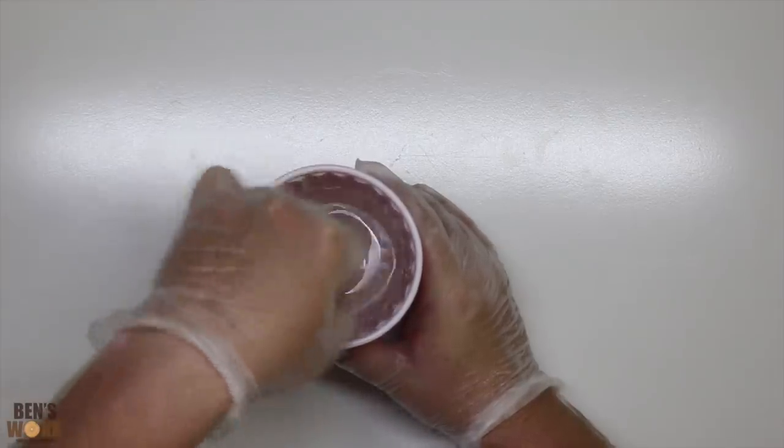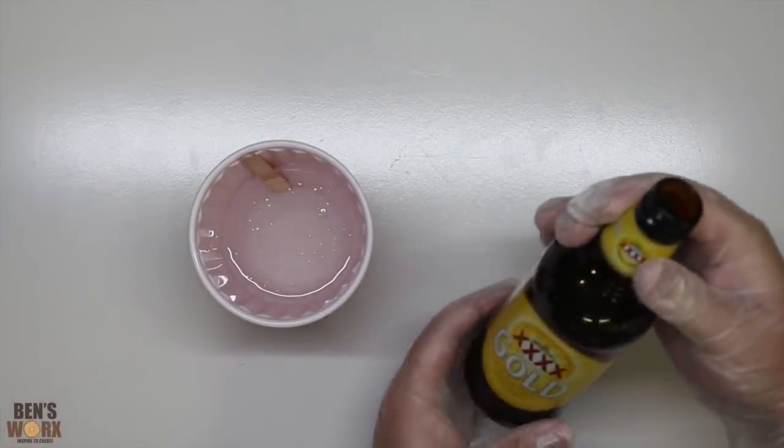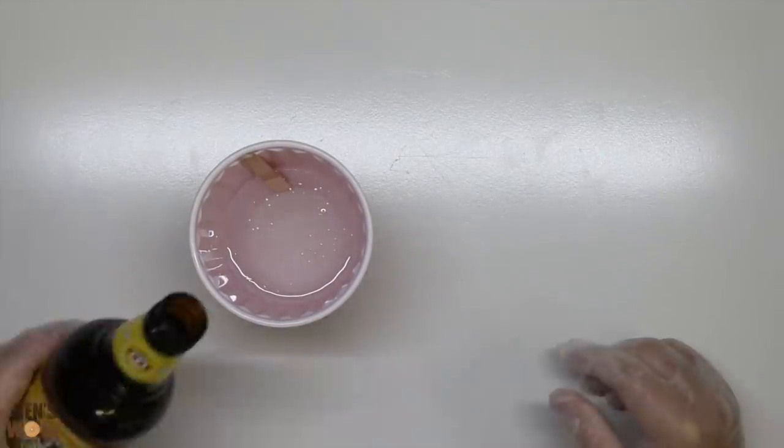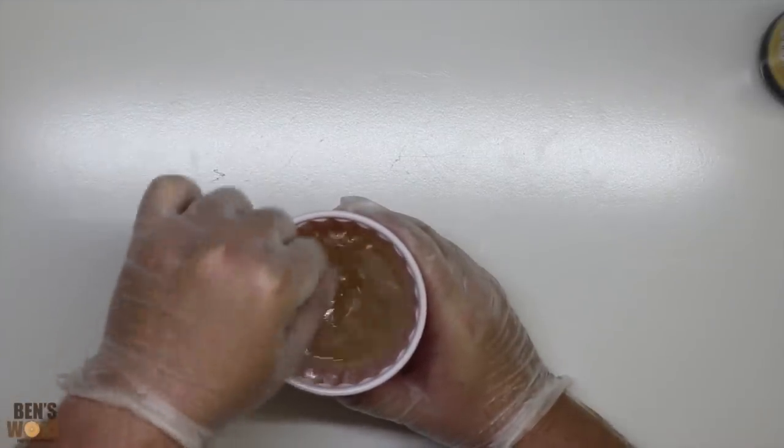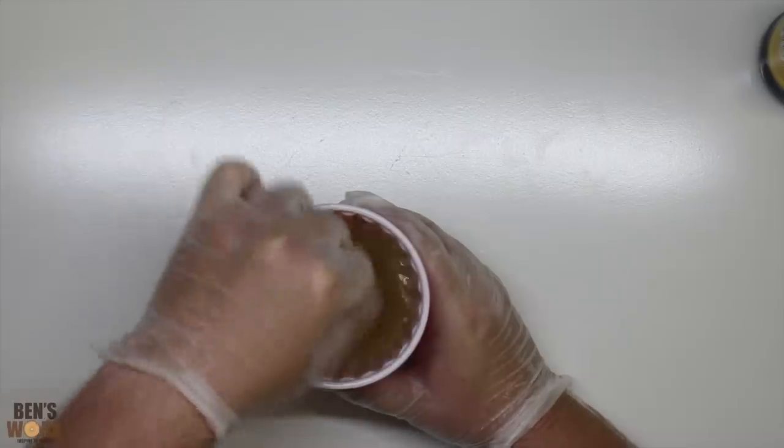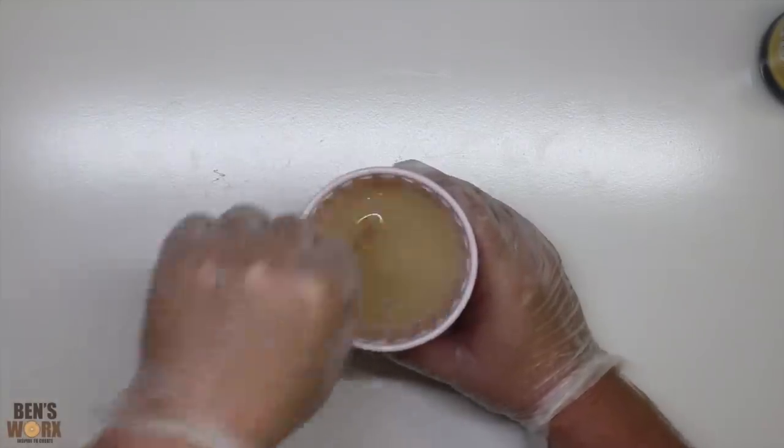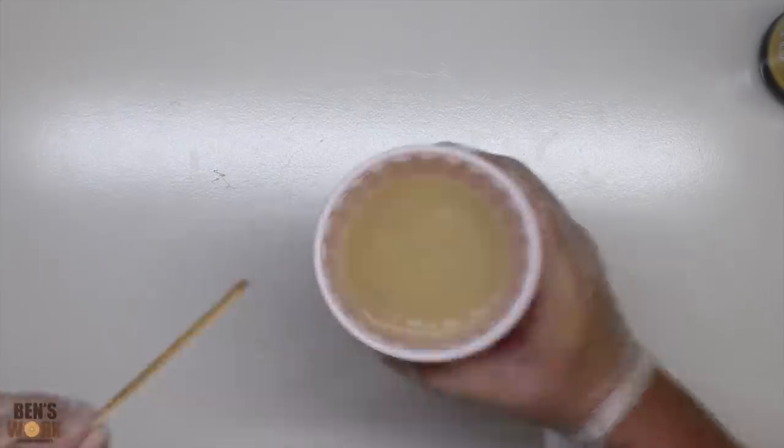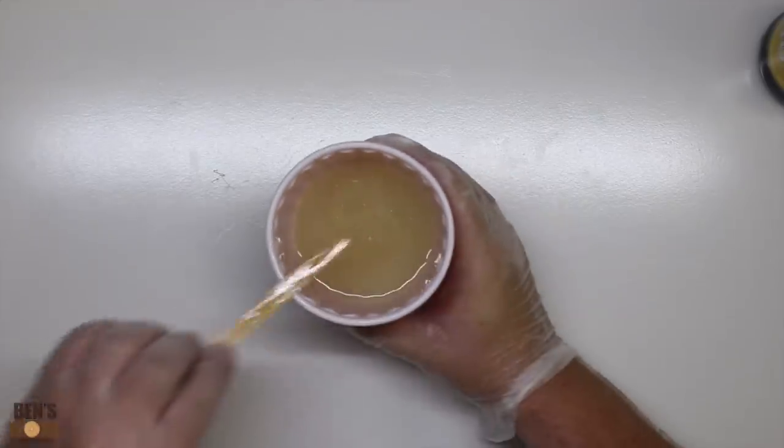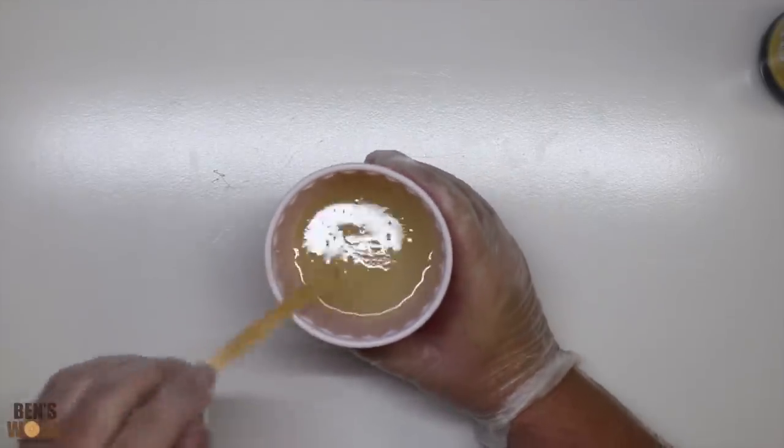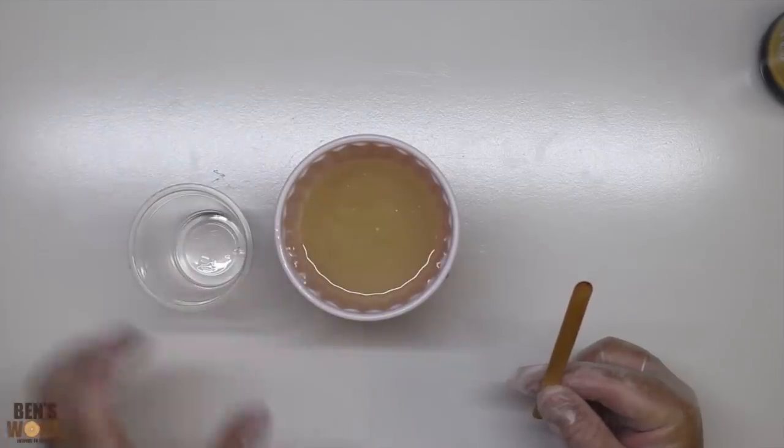While that one's curing in the pressure pot I'm going to start the second blank. For this one I'm just going to take my beer and pour it straight in. Now I'll give it a mix. Well, smells like beer, that's a good thing I guess. All that's left to do is pour it into this plastic cup and that's going to be our mold.